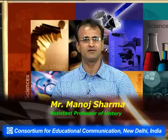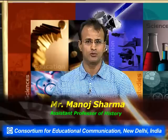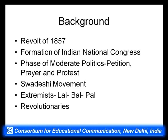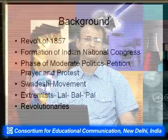The first organized protest against colonial rule could be seen in the revolt of 1857. After that, we see the formation of the Indian National Congress in 1885. During the moderate phase from 1885 to 1905, the moderate leaders were petitioning, praying, and protesting — petition, prayer, and protest were the main activities during the moderate phase.